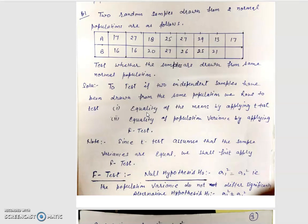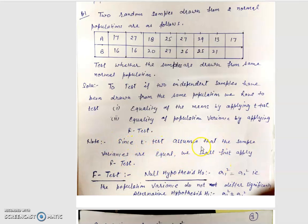This F test requires us to test if two independent samples have been drawn from the same normal population or not. That is why first of all we have to check equality of the means by T test — which you already know — and equality of population variance by applying F test. Note this important point: since the T test assumes that the sample variances are equal, we shall first apply the F test.